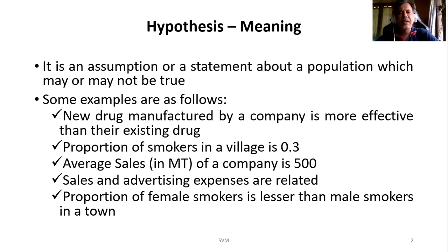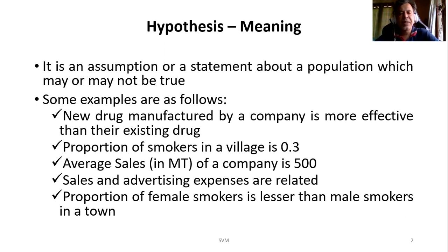Or a sales manager may say that the average sales of his company is 500 metric. And a marketing manager may consider that sales and advertising expenses — whatever sales turnover is happening and whatever advertising expenses they are incurring — these two variables are related with each other. The last example is: proportion of female smokers is less than the male smokers in a town. Here there are two different populations — one is female population, one is male population. Similarly, the drug example also involves two populations. The smokers and sales examples are about single populations.